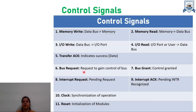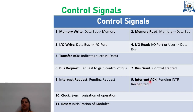The sixth control signal is bus request, when various subcomponents request to gain control of the bus. In response, the bus grant signal is enabled, granting control of the bus to the requesting subcomponent. Next is the interrupt request, which handles pending interrupt requests. In response, the interrupt acknowledgement signal ensures whether pending interrupts are recognized. The tenth signal is the clock, required for synchronization of operations within the computer system. Finally, the reset control signal is used to initialize multiple modules available within the computer system.